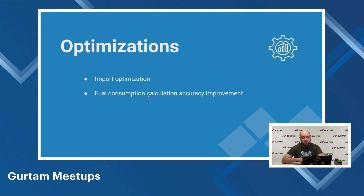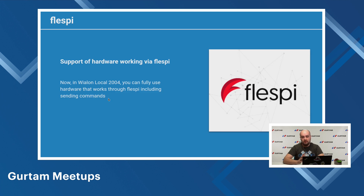As for optimizations, we enhanced the import mechanism, making the import of large data volumes faster. When an import error occurs, you will see its detailed description. As for fuel consumption calculation, the order of filtration and smoothing was changed to increase the accuracy of calculations. In Vialon Local 2004, you can now fully use hardware that works with Flespi, including sending commands.